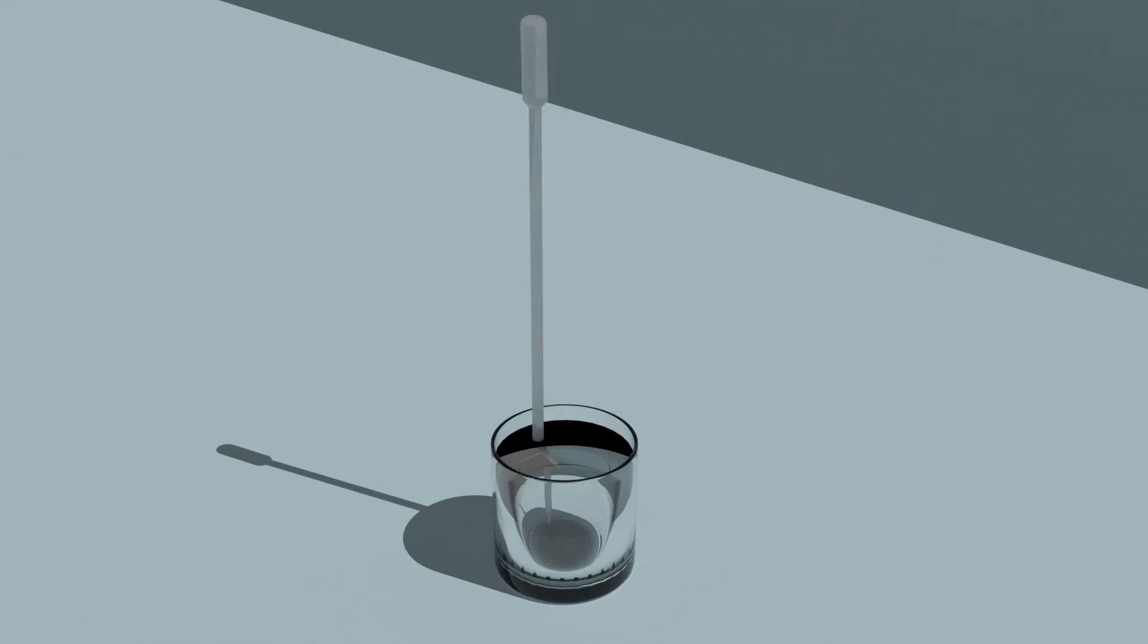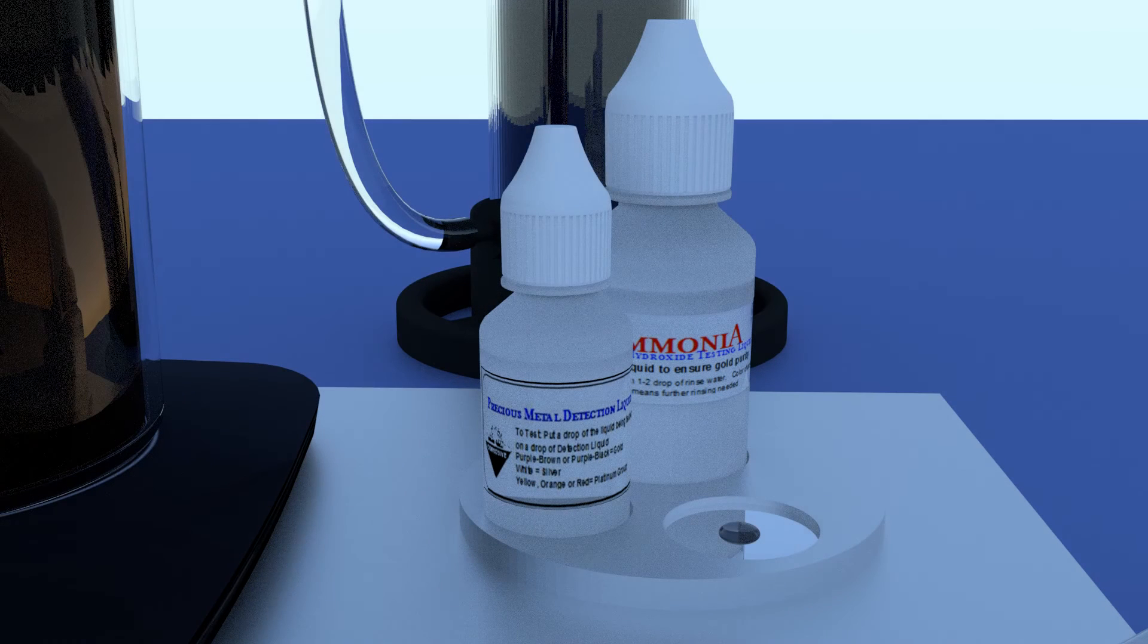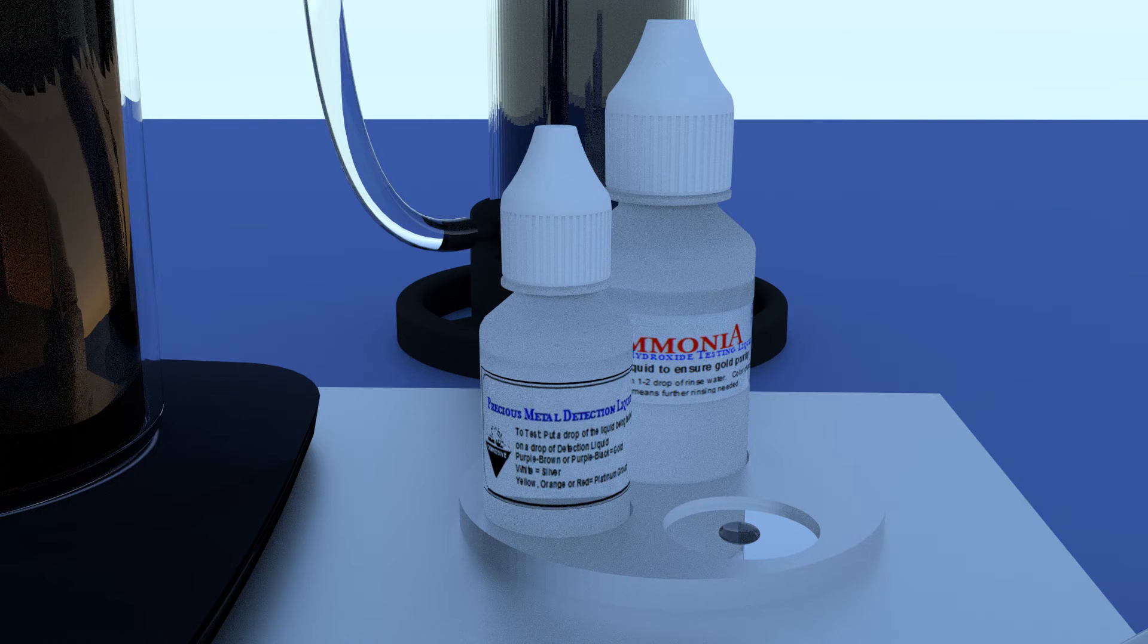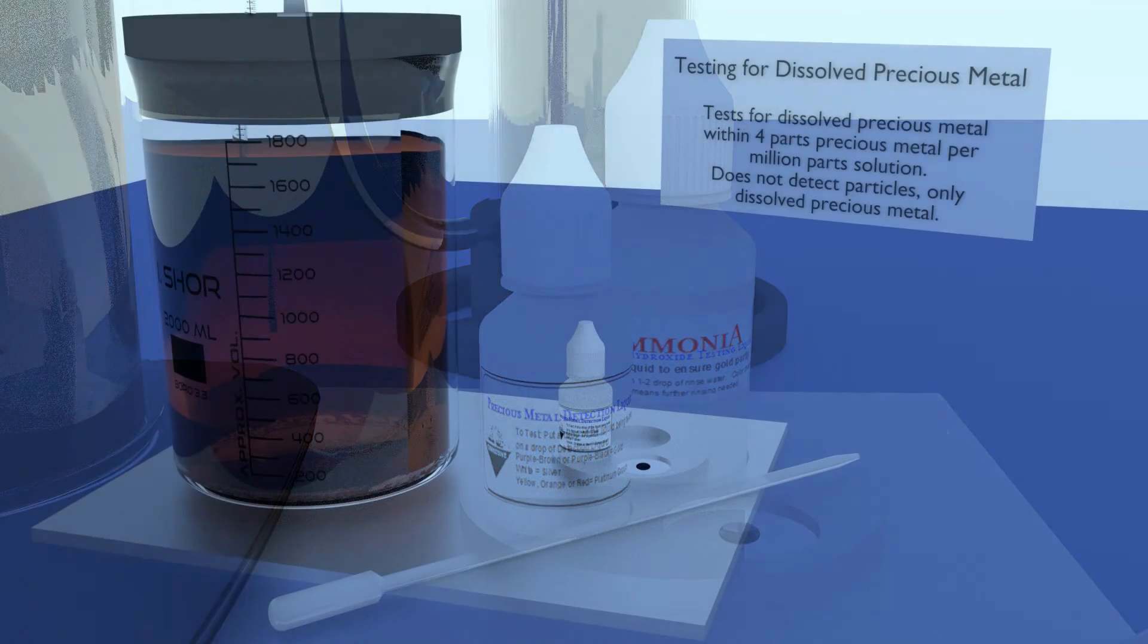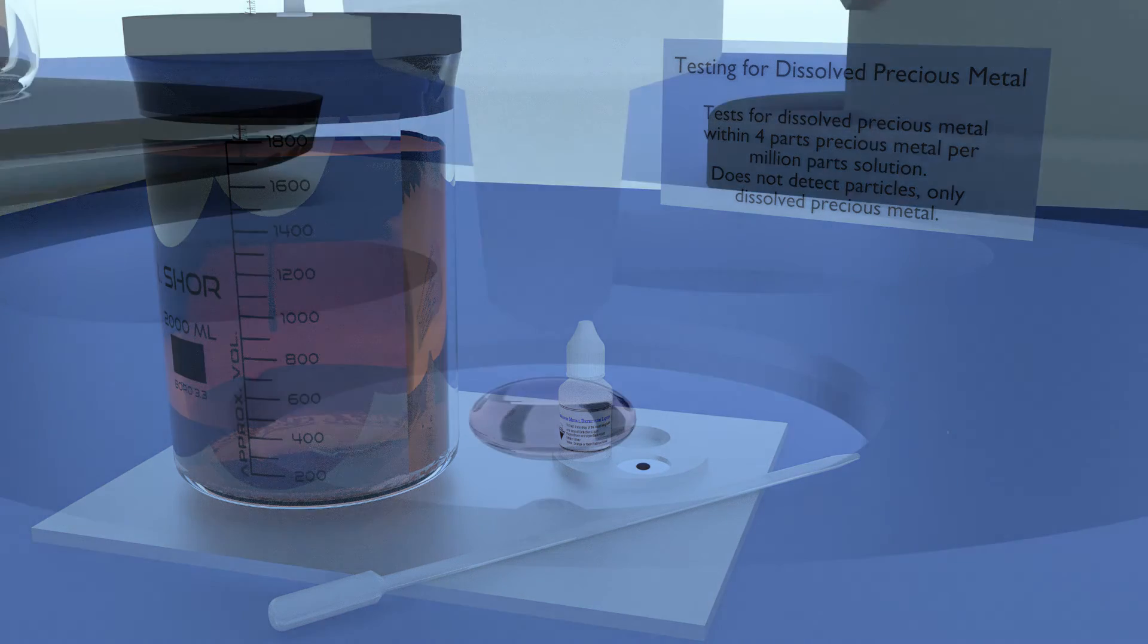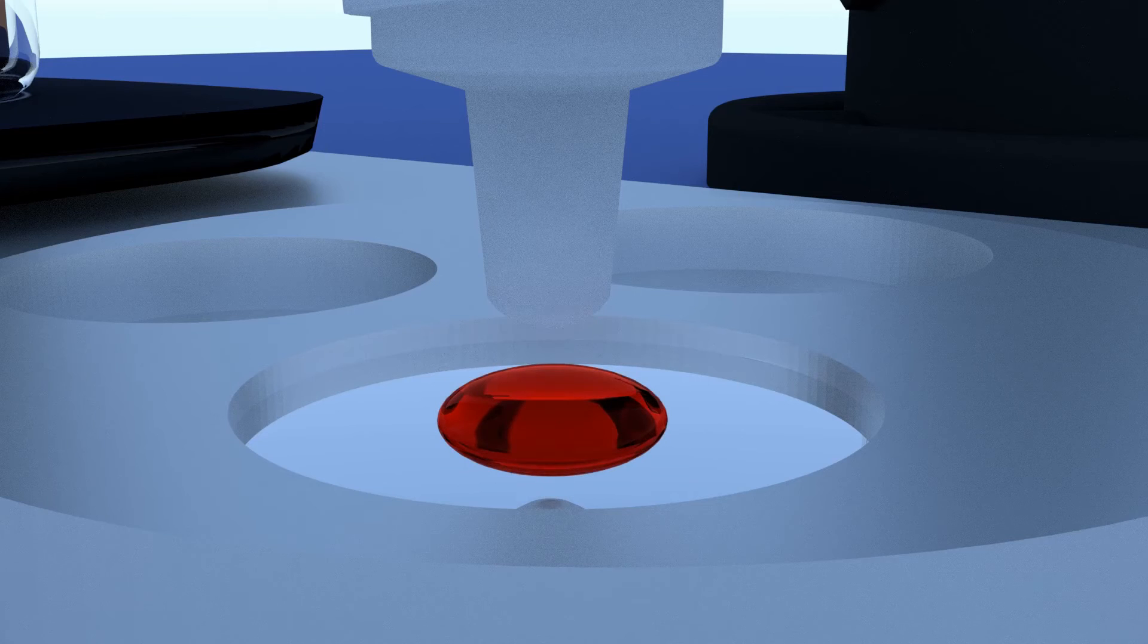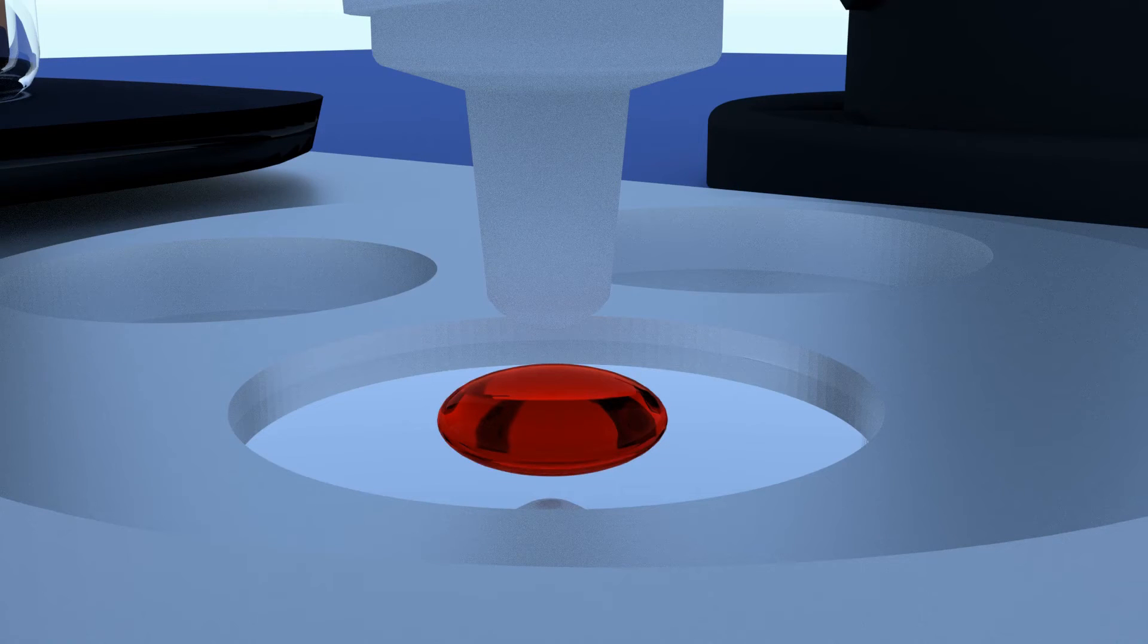You can run this test as often as you like. Just be sure to clean the pipette inside and out between tests. Cleaning ensures that you don't get a false positive. This test is sensitive to within four parts of precious metal per million parts of solution, and it will also detect dissolved platinum group metals. Different color changes for different precious metals.